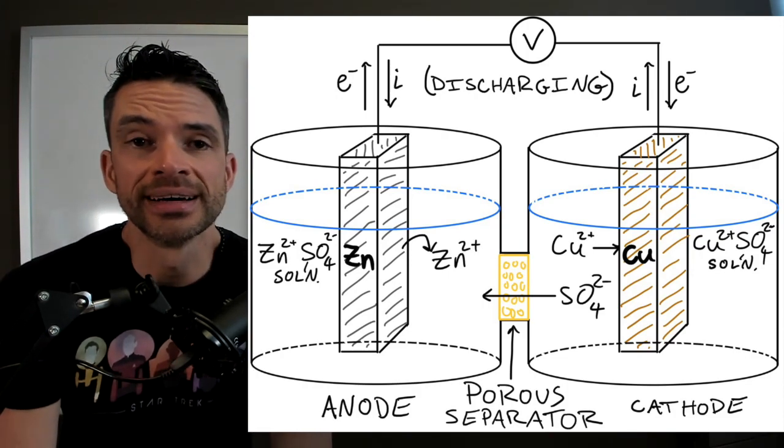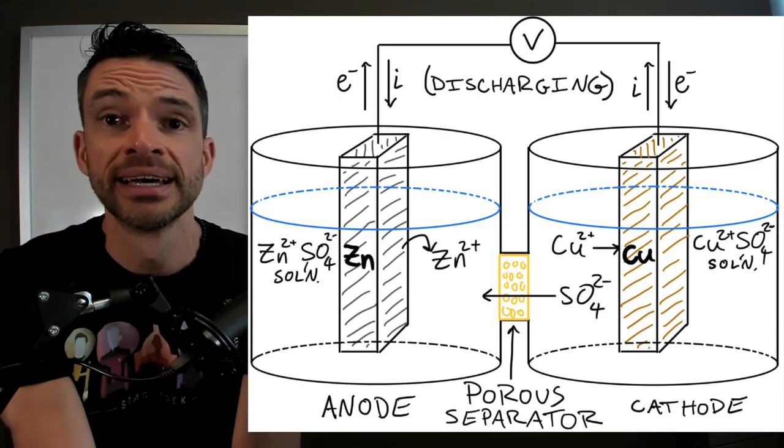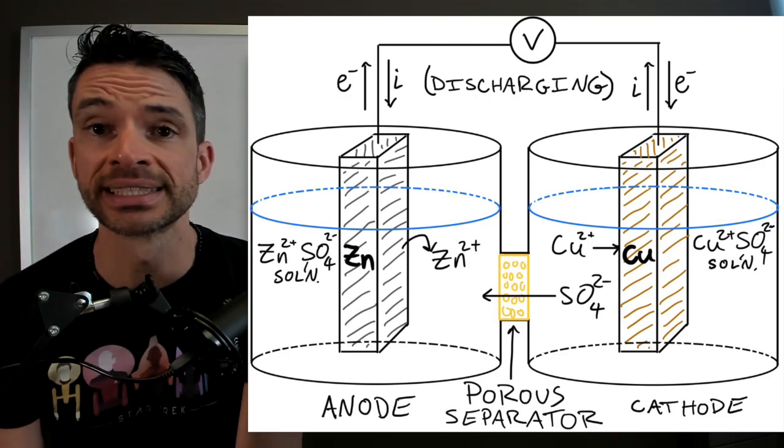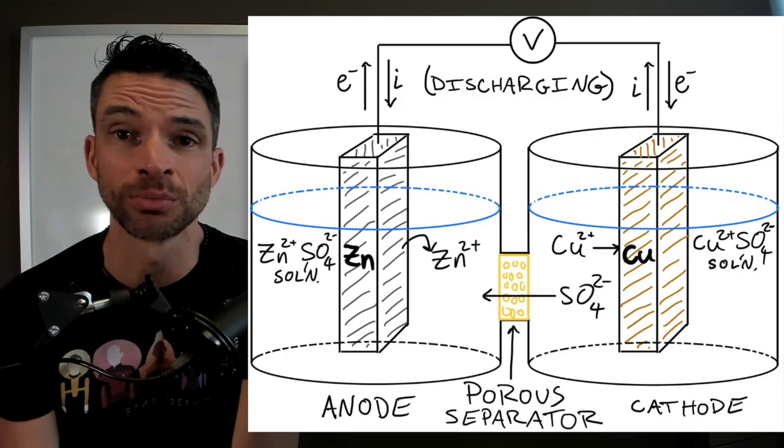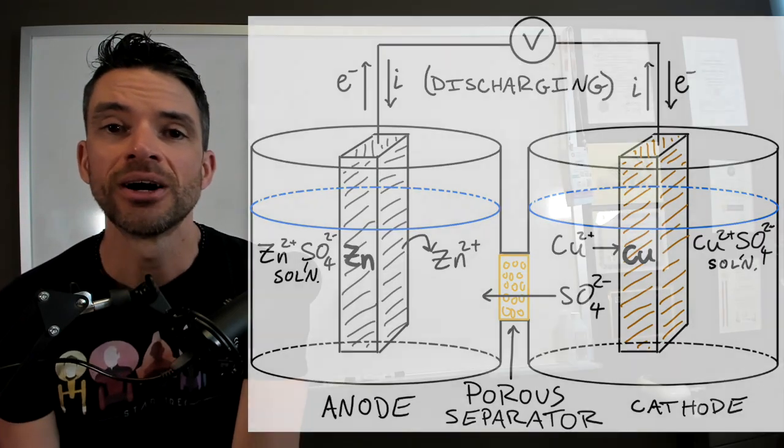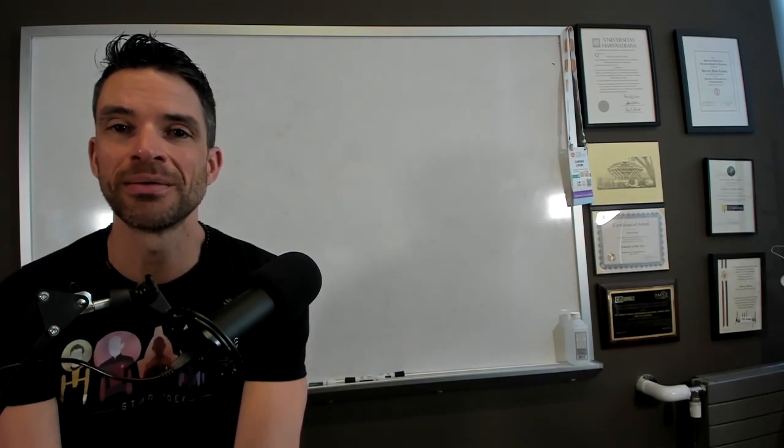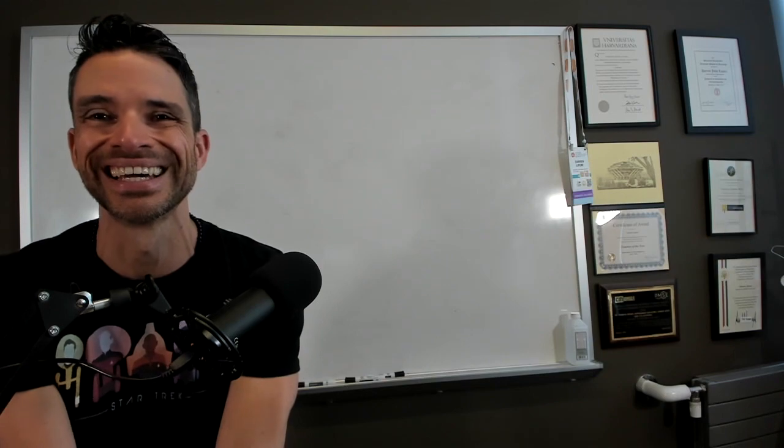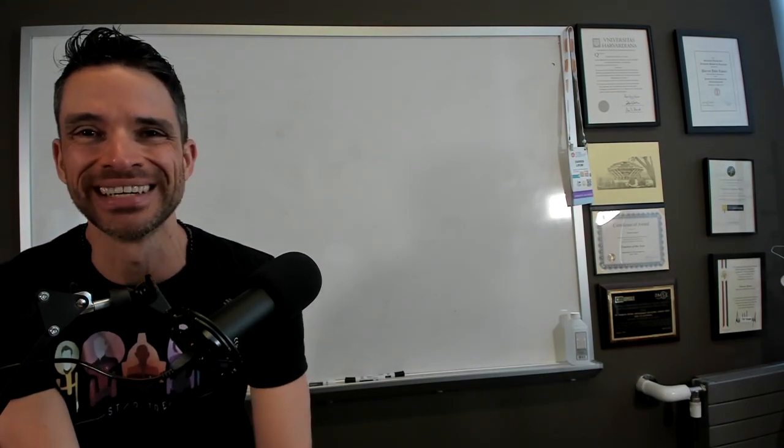And then on the anode side, you have the zinc, which is being oxidized to zinc two plus. And that electrode actually gets thinner and smaller as a result of the discharging cycle. Okay, now you don't see that many copper zinc batteries, probably none in everyday operation.